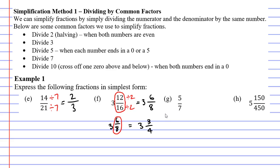Looking at question G, we have 5 over 7. Neither of these numbers are even, so we can't divide by 2. Neither of these numbers end in 0, so we can't divide by 10. And one number ends in 5, but you need both of them to end in either a 5 or a 0, so we can't divide by 5.